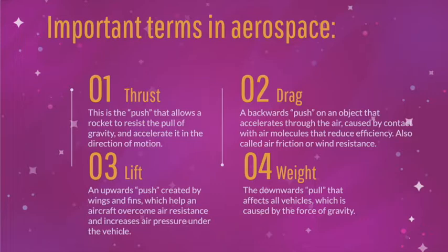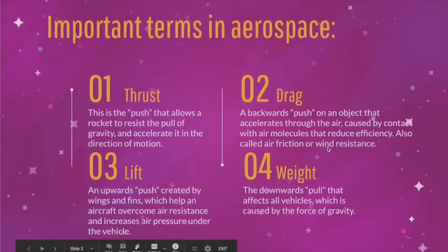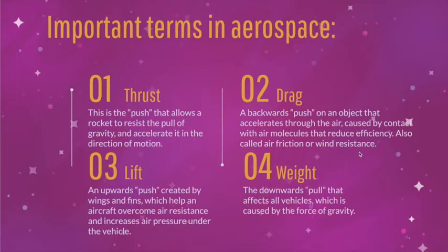The first term is thrust. This is what's going to push our rocket forward. In our case, it will be two different kinds of air that will push our rocket forward — that is where the explosive force comes from. Drag is the push back: when the rocket's trying to go forward, it's going to hit the air, and the air molecules will push back. This is also called air friction or wind resistance — a very important concept when designing our rockets.